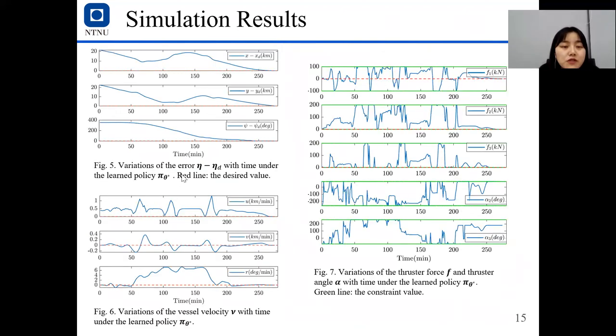This is the variations of the docking error under the learned optimal policy pi_theta_star. As you can see, when we do docking, finally, the errors will reach zero. And you see the velocity also goes to zero, which signifies a successful docking. And for the force, it also goes to zero. And for angles, it will keep constant. It means there's no more actions on the ASV operation.